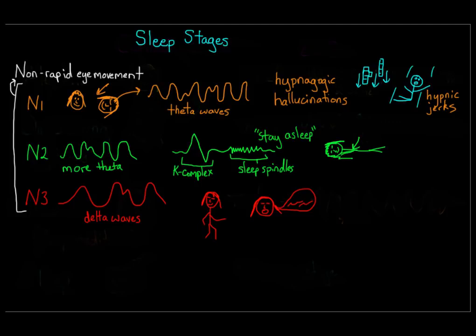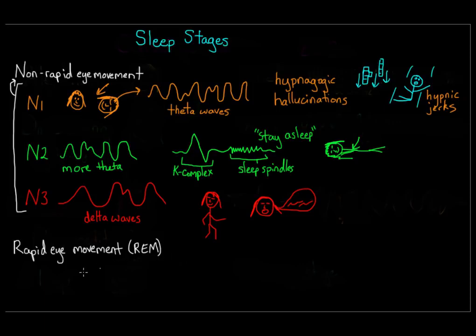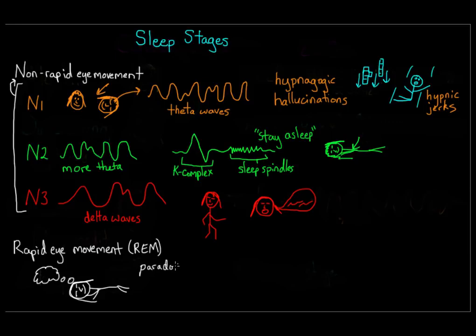The last stage is REM sleep. REM stands for rapid eye movement, because during this stage your eyes move really rapidly beneath your lids. Most of your other muscles are paralyzed — which is actually a good thing, because most dreaming occurs during REM sleep. If you weren't paralyzed, your muscles might act out whatever you were dreaming about, which could be unsafe. REM sleep is sometimes called paradoxical sleep because your brain seems very active and awake, but your body is prevented from doing anything.